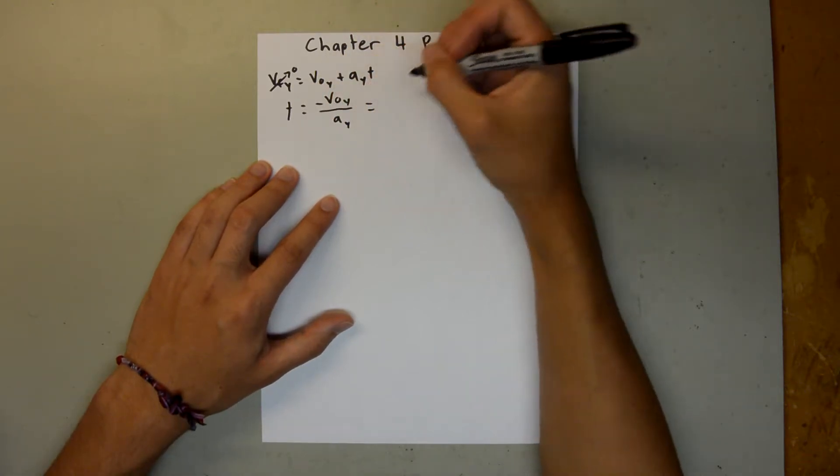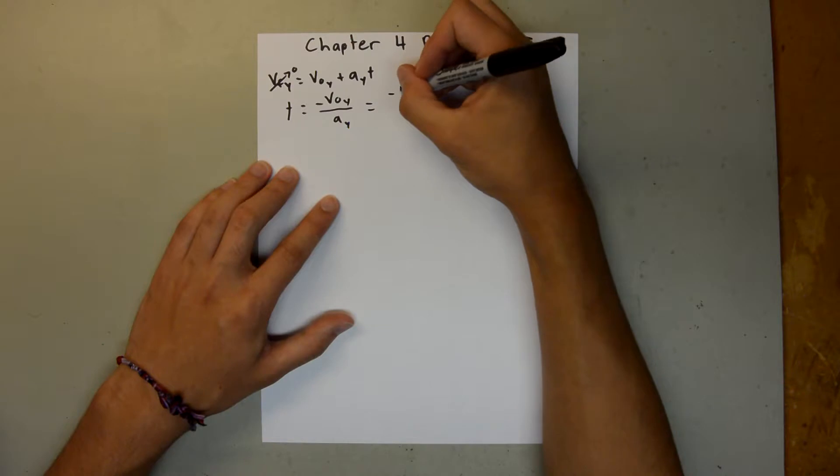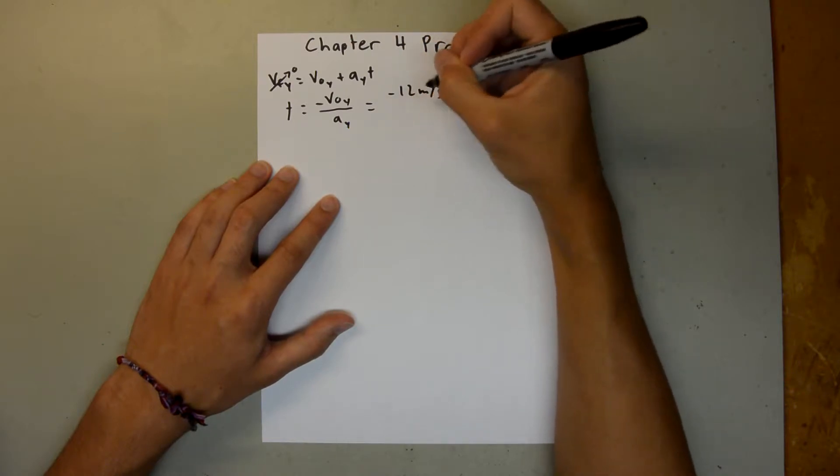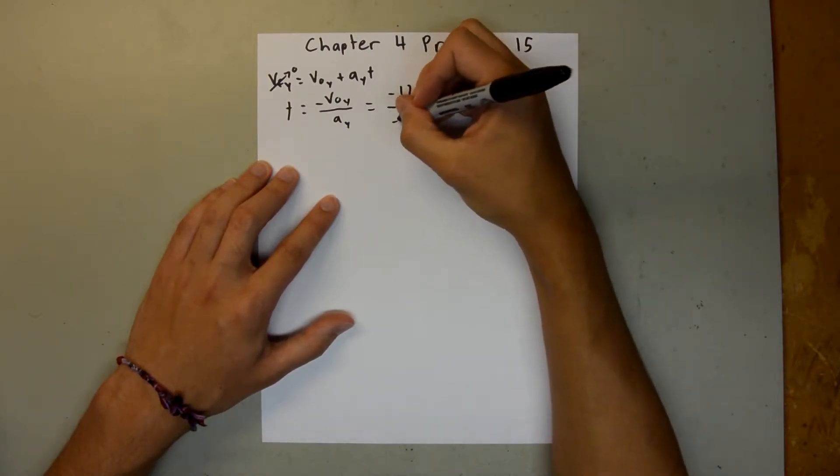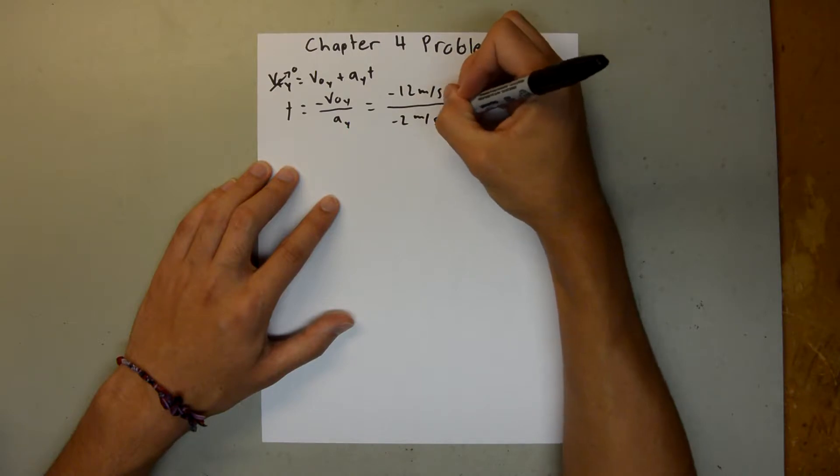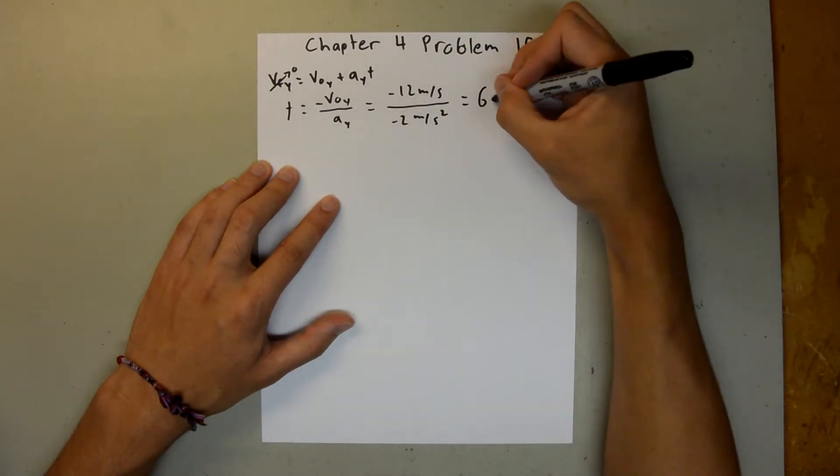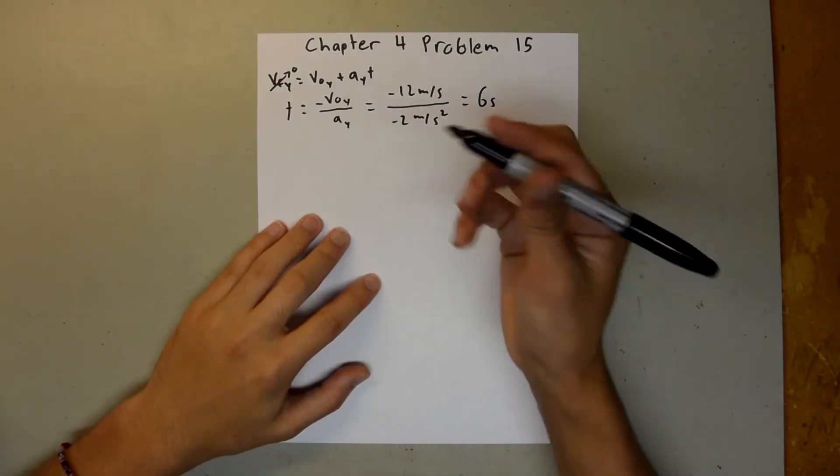And we have both of those values, so we can plug them right in. Negative 12 meters per second over negative 2 meters per second squared. And that's going to be equal to 6 seconds.